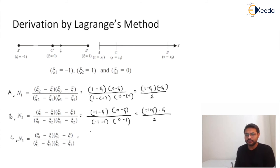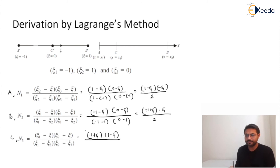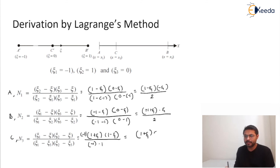Putting in psi1 minus psi — that is minus 1, taking it common gives (1 plus psi). So (1 plus psi) times (psi2 minus psi) which is (1 minus psi), divided by minus 1 common. Psi1 minus psi3 is minus 1 minus 0 which is minus 1. The minus signs cancel out, so we have (1 plus psi)(1 minus psi). Likewise we have converted the shape function values in terms of psi at different points.